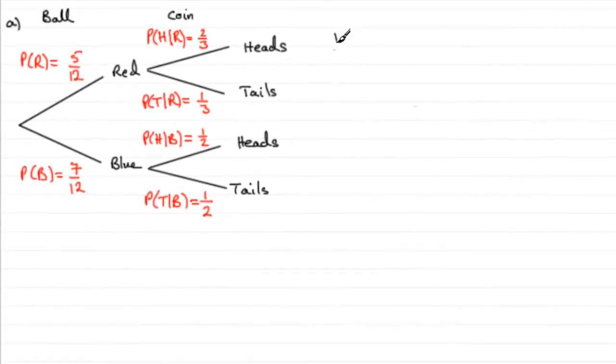Now, for part B, we're told that Shivani takes the ball and spins the appropriate coin, and we've got to work out the probability she gets a head.